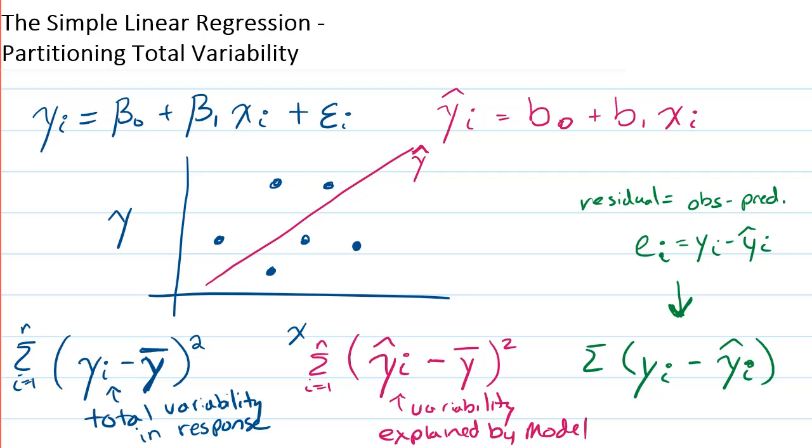And so when I sum this up from i equals 1 to n, and I square it to get rid of the sign, this is called the variability that is unexplained.